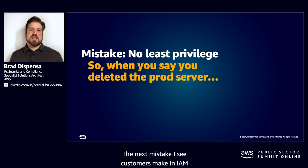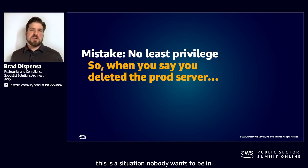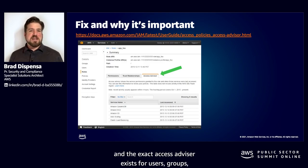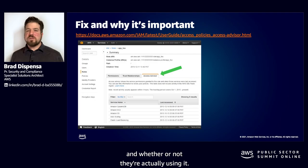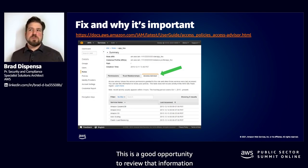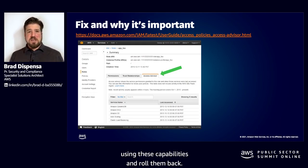The next mistake I see in IAM is least privilege. When someone deletes a production server — this is a situation nobody wants to be in. How do we make sure people don't have more access than they really should? Inside of identity and access management, there's a tab called the Access Advisor. It exists for users, groups, and roles, and provides information about what that principal has been authorized to access and whether or not they're actually using it. You can see the user has been provisioned access to a number of services, but there may be gaps in when they're actually using it — a good opportunity to roll back overly permissive access.